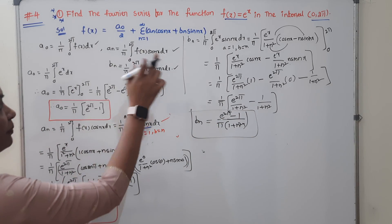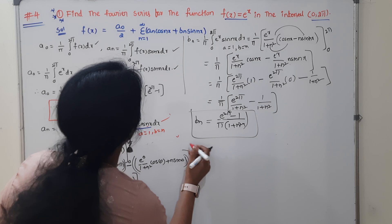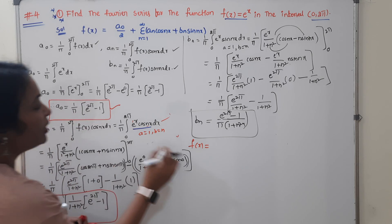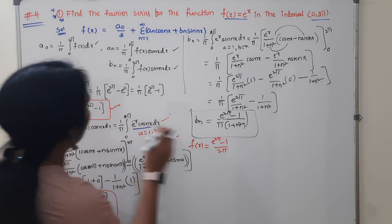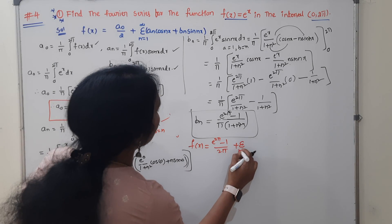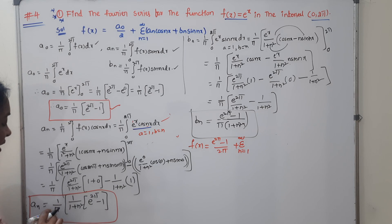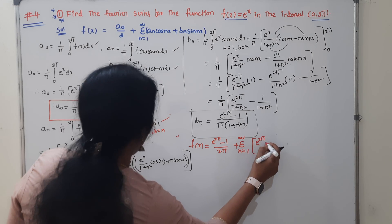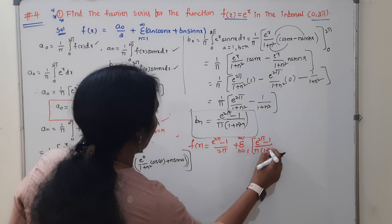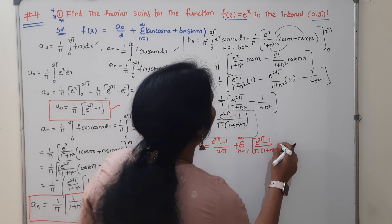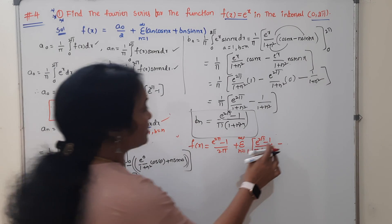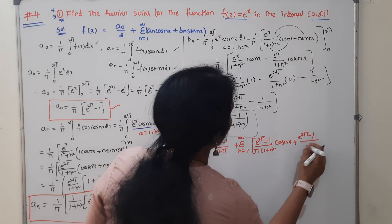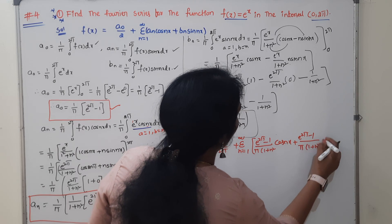Now put all a0, an, and bn values into the Fourier series. Therefore the Fourier series is: (e^(2π)−1)/(2π) + summation from n=1 to infinity of [(e^(2π)−1)/(π·(1+n²))·cos(nx) + (e^(2π)−1)/(π·(1+n²))·sin(nx)]. The factor (e^(2π)−1) is common throughout the series.